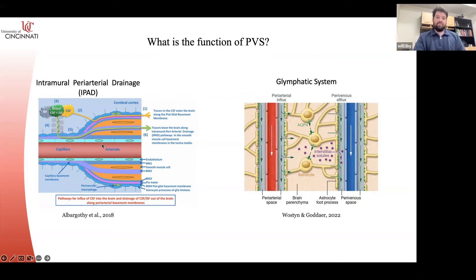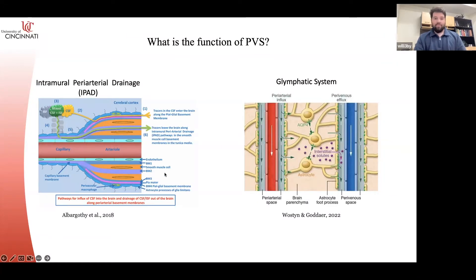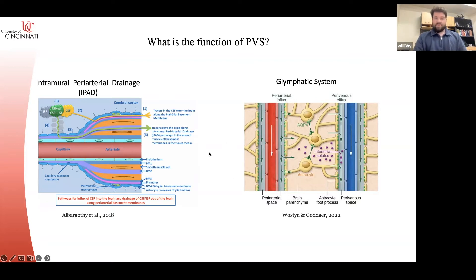There's some controversy around this. Computational models have shown that vasomotion alone isn't powerful enough to pump the fluid. So there are other theories, including smooth muscle cells having a dual function of also pumping the fluid out of the PVS. But these are the mechanisms we're looking at when we talk about the perivascular space.